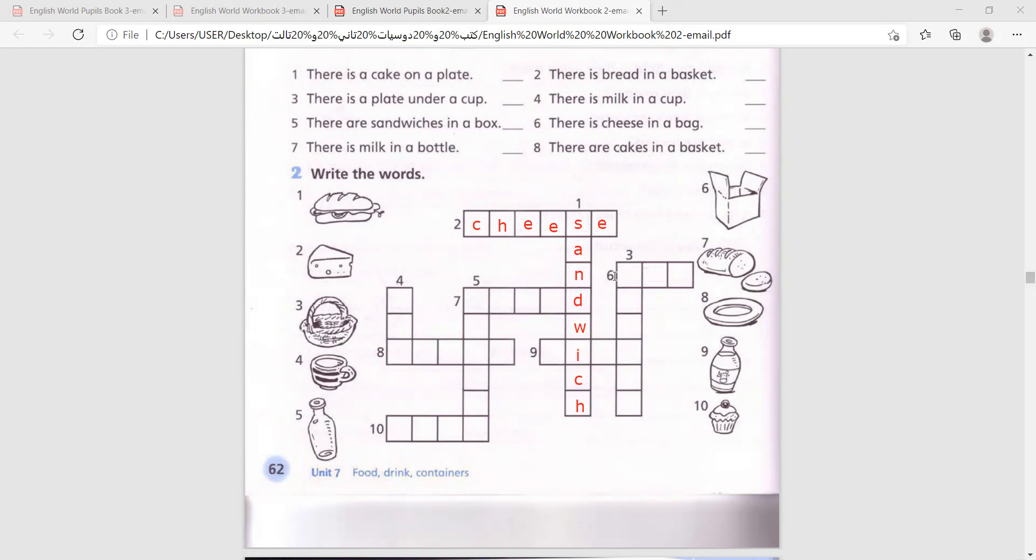Number three, basket. B-A-S-K-E-T. Number four, cup. Four is on top, so we start writing from top to bottom. Very easy, it's like a game. Of course, you will have more fun if you do it by yourself. Number five, bottle. B-O-T-T-L-E.